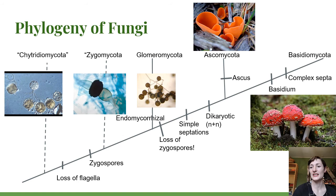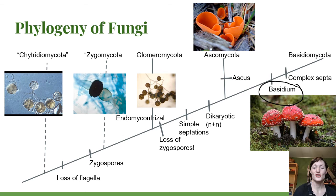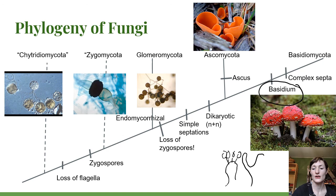That brings us to the end of our phylogeny. We learned that Basidiomycota are united by the presence of a basidium, which can look very different — usually producing four spores, sometimes two, sometimes club-shaped, or like a tuning fork, or producing spores off the side as in rusts and smuts. The key defining feature is that spores are produced on the outside of the basidium, unlike the ascus where they're produced internally. This has been Basidiomycota.